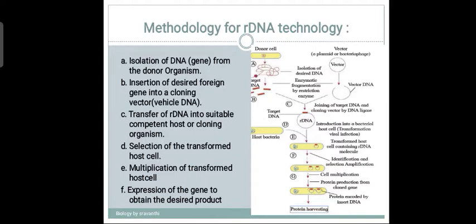Let us start with the methodology for rDNA technology. The first step is the isolation of DNA from the donor organism. The second step is insertion of the desired foreign gene into a cloning vector. The third step is transfer of rDNA into a suitable host or cloning organism. The fourth step is the selection of the transformed host cell.